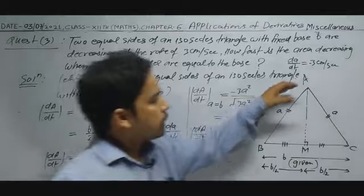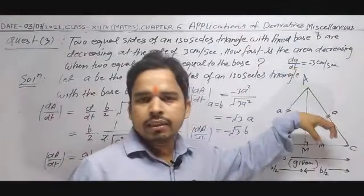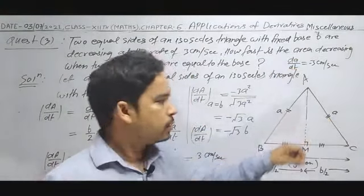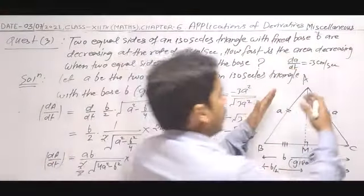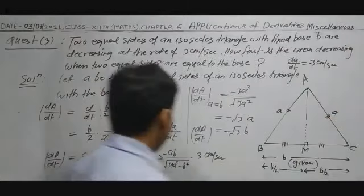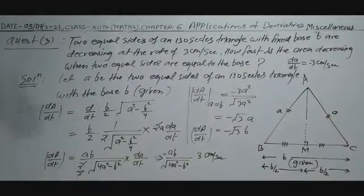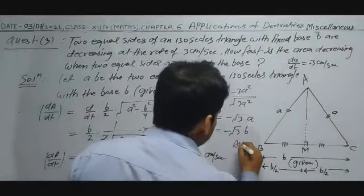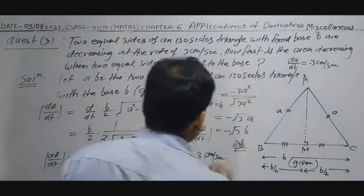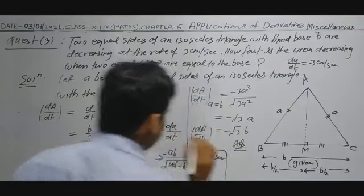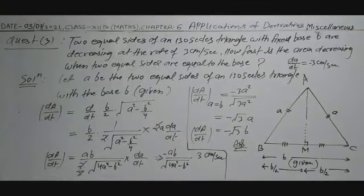The area decreases when the two equal sides of the isosceles triangle with base B are decreasing. When two sides decrease, the area decreases. This is the complete solution and the answer.